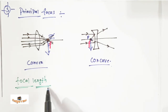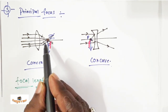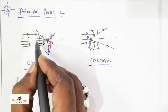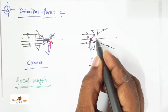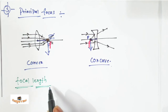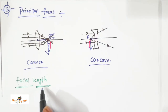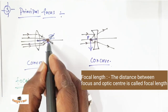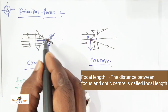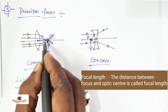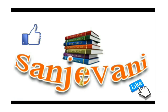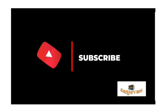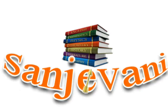What is focal length? Focal length is the distance between the principal focus and the optic center. The distance between focus and optic center is called focal length.